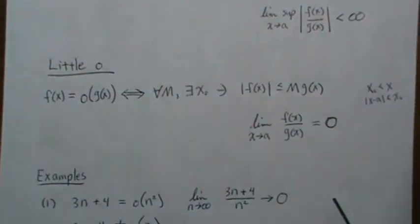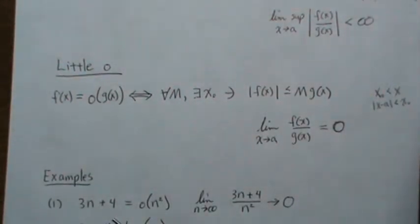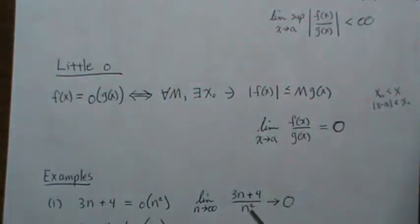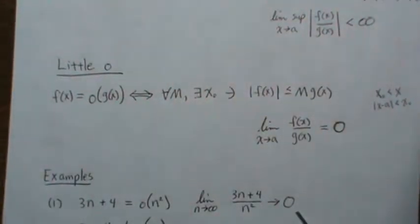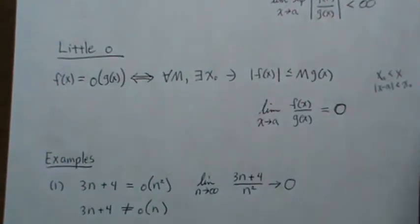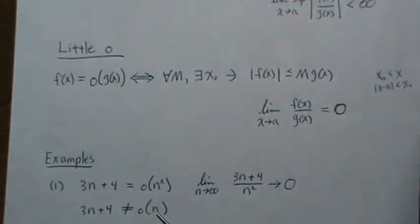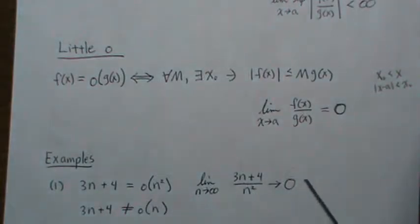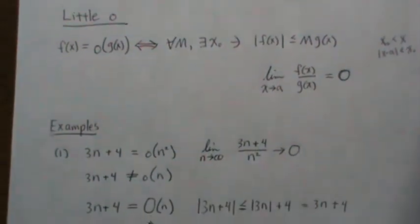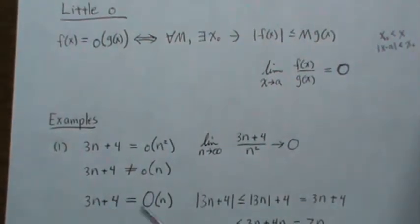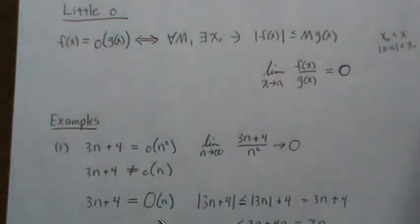Let's look at some simple examples first and then we'll jump into something a little more complicated. So 3n+4 is little o of n². It says that n² dominates 3n+4 as n goes to infinity, and you look at it by this ratio. If n goes to infinity, it's easy to show that goes to zero. Note that 3n+4 is not little o of n, because if you use n instead of n², then this goes to a constant — so n doesn't dominate 3n+4. But since it goes to a constant, that's saying that 3n+4 is big O of n — that 3n+4 and n behave similarly as n gets big enough.